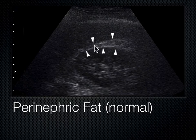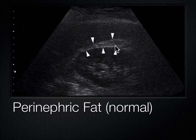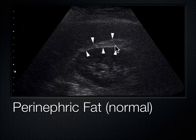A common finding is a hyperechoic separation between the kidney and the liver or spleen — that's perinephric fat, a form of visceral body fat seen around the kidneys, blood vessels, and the heart. You can't predict based on body habitus whether someone will have a large perinephric fat pad — someone could be very thin and still have significant perinephric fat. We don't control it much through diet.